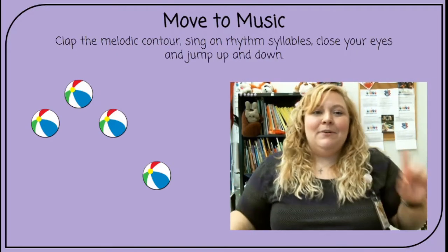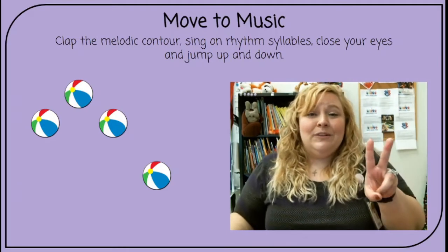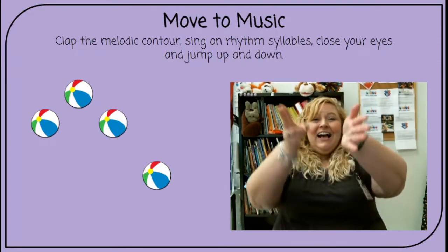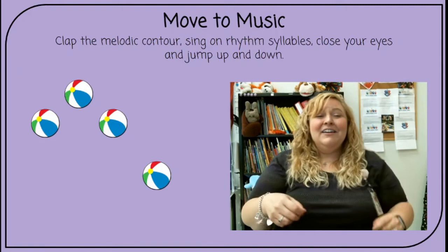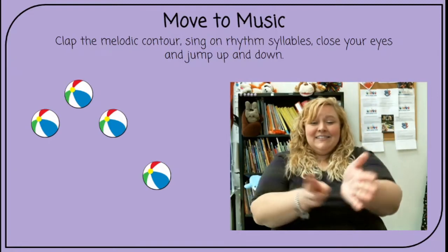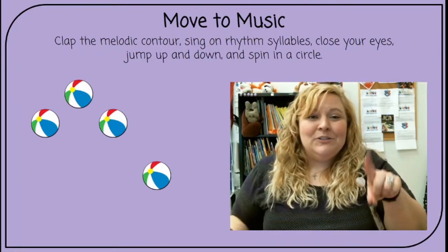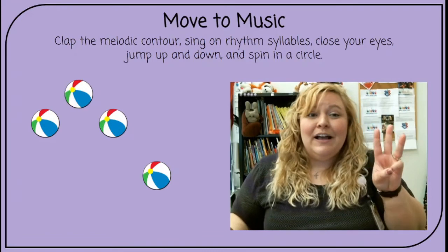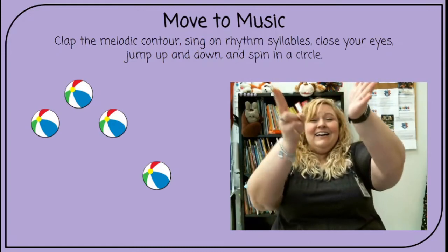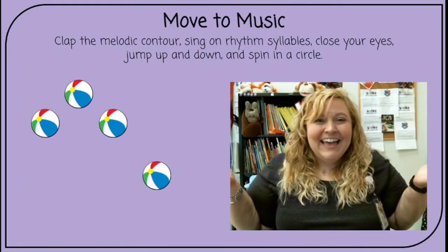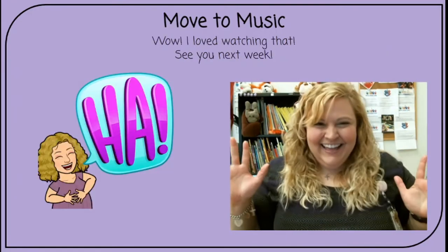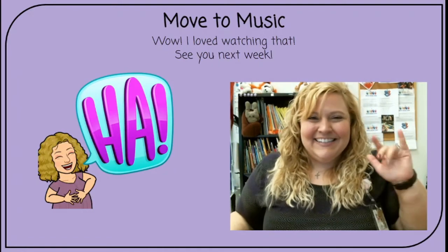Stand up. This time, clap the melodic contour, sing on rhythm syllables, close your eyes, and jump up and down. Ready, sing. Ta, ta, ta, ta. Do that again and ready, sing. Ta, ta, ta, ta. This time, clap the melodic contour, sing on rhythm syllables, close your eyes, jump up and down, and spin in a circle. Ready, sing. Ta, ta, ta, ta, ta. Do that again and ready, sing. Ta, ta, ta, ta. Wow, I really loved watching that. See you next week.